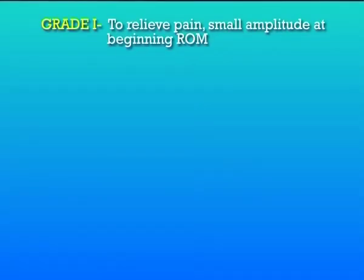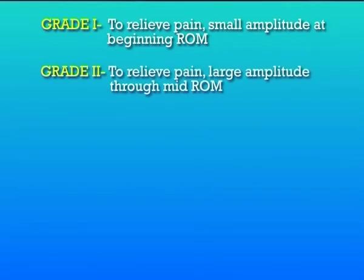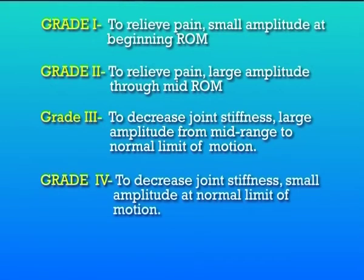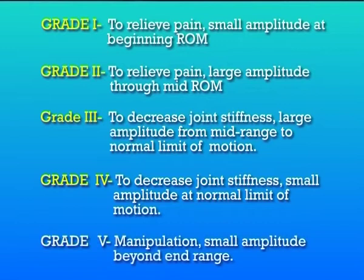Passive mobilization is the movement within the unrestricted range of motion for a segment that is produced entirely by an external force with no voluntary muscle contraction. There are five grades. Grade one is to relieve pain — small amplitude at the beginning range of motion. Grade two is to relieve pain — large amplitude through mid range. Grade three is to decrease joint stiffness — large amplitude from mid range to the normal limit of motion. Grade four is to decrease joint stiffness — small amplitude at normal limit of motion. Grade five is manipulation — small amplitude beyond end range.